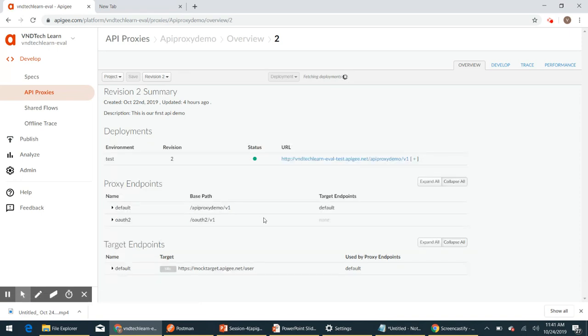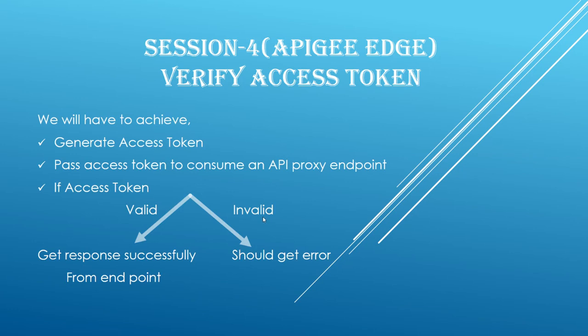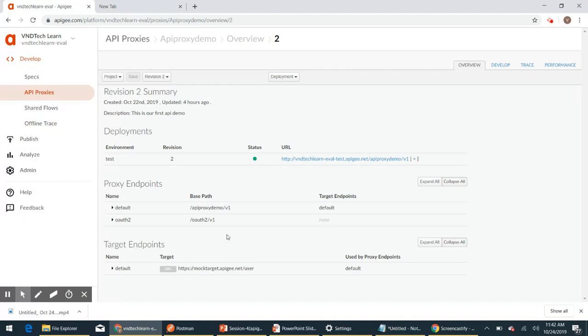What we want to achieve is: generate an access token and pass it to consume an API proxy endpoint. If the access token is valid, we should get a successful response from the endpoint. On the other hand, if the access token is invalid, we should get an error. Let's see this in action.